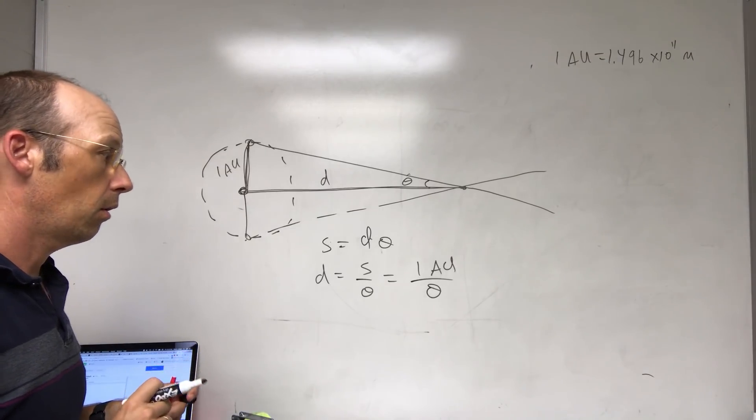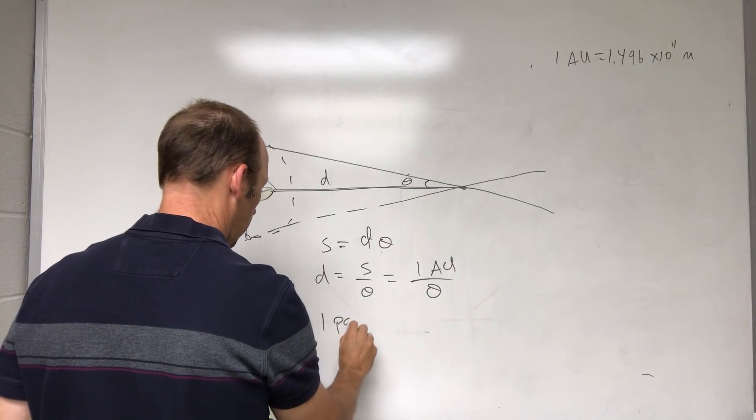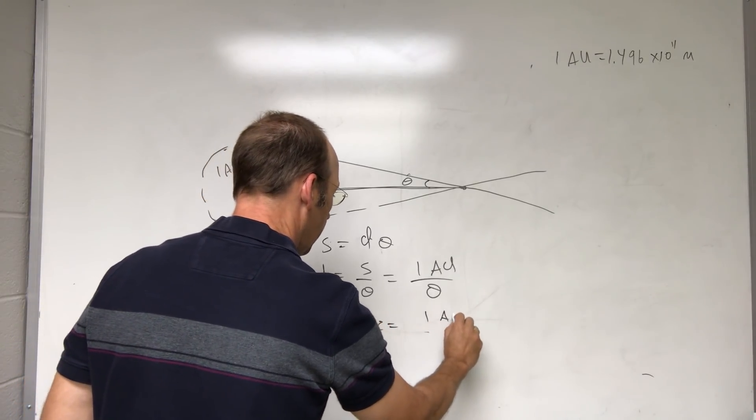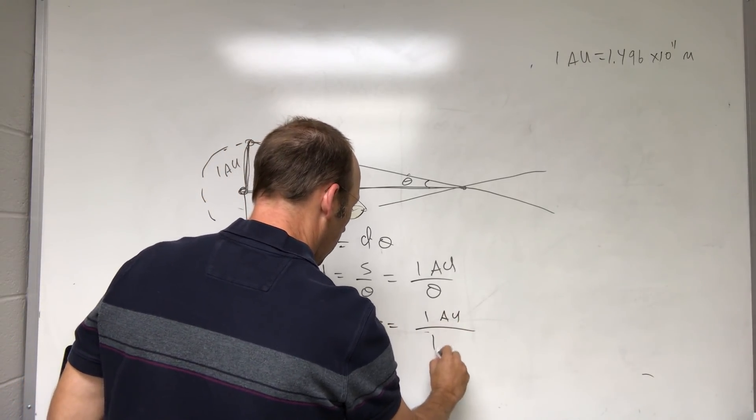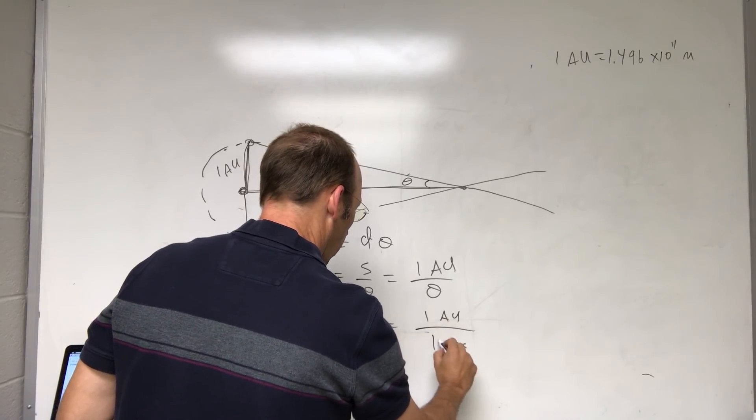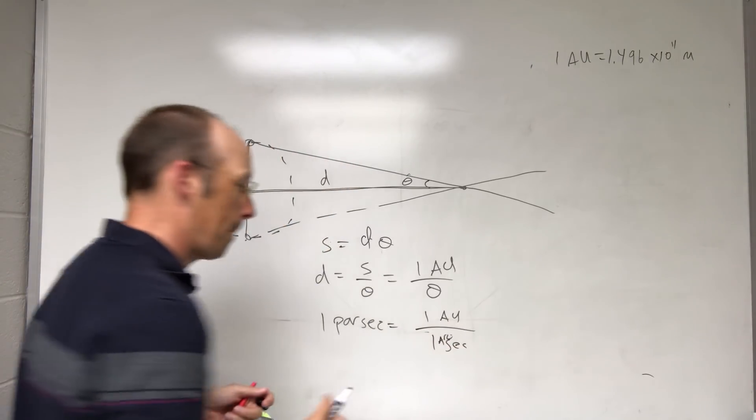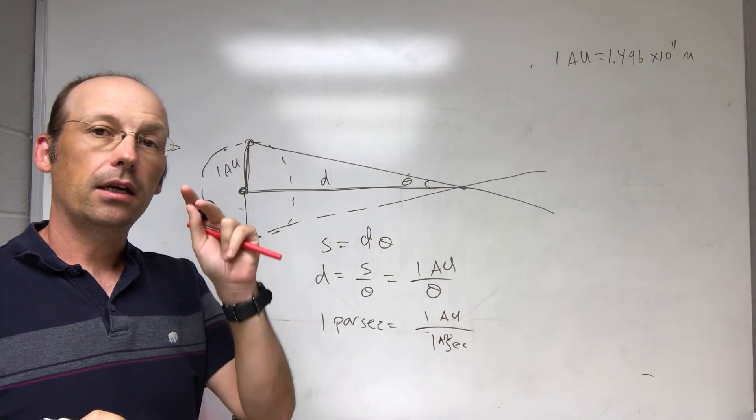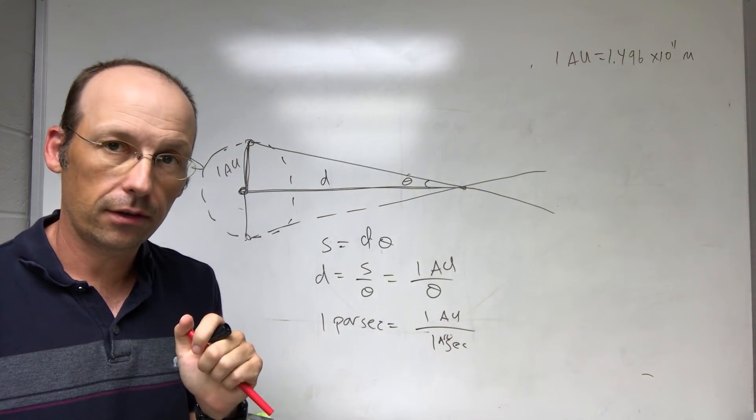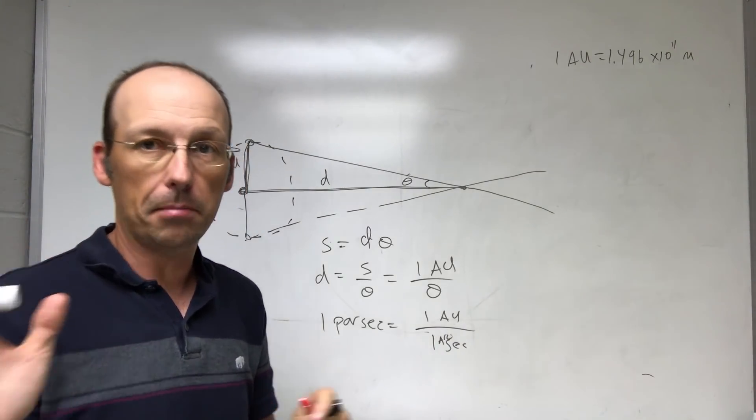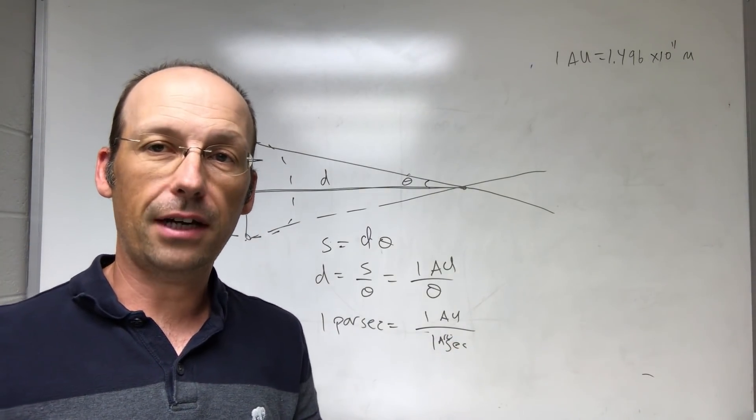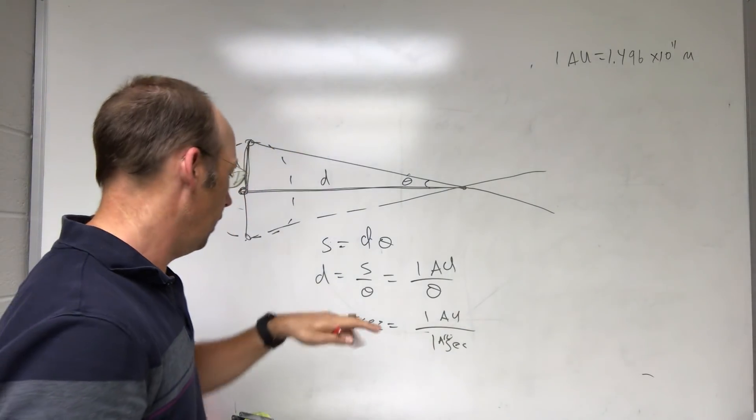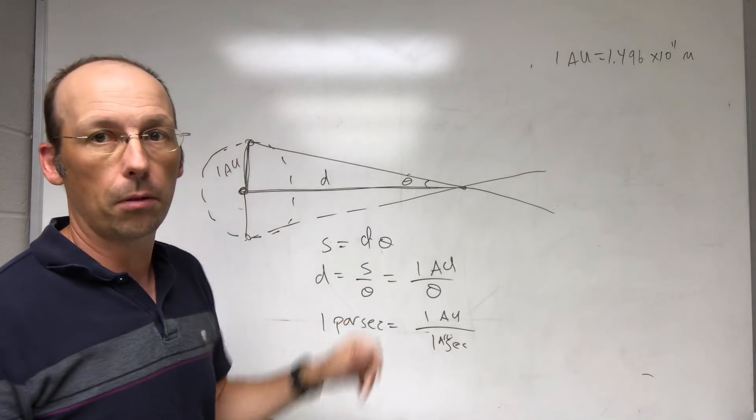Now, one parsec equals one AU over one arc second. So if the parallax shifts by one arc second of a degree, which is a degree breaking into 60 minutes, you break that minute into 60 seconds. Yeah, I don't know why they do that but they do it. Okay, it's fine. It's an old thing. Then that shift would equal one parsec.